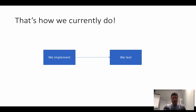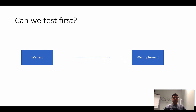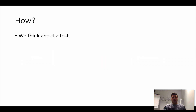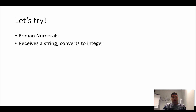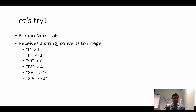Then we went to the idea of test-driven development, which is basically to switch what we do. Instead of implementing and then writing tests, can we write tests first and then implement? We think about a test, write a test, implement the code in the simplest way we can — and that's what we tried to do with the Roman numerals example. We did TDD with the Roman numerals: we thought about cases, for example returning one for I, wrote the test, then wrote the implementation, and repeated.